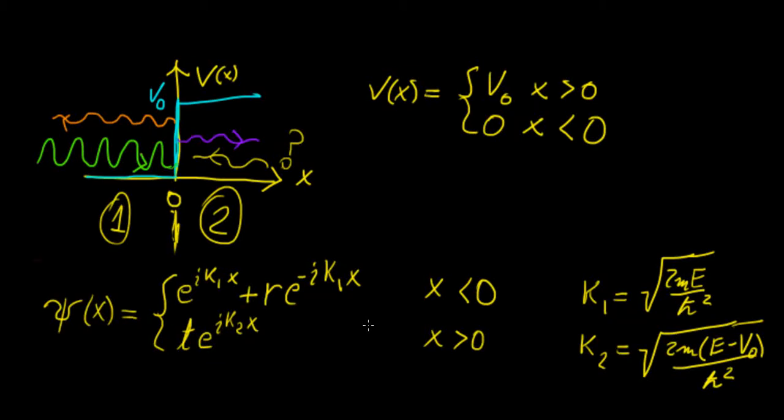Continuing with our videos on the potential step problem, we already found out what the solutions are going to be for both regions. For x less than 0, we're going to have an incident wave and a reflected wave, and for x greater than 0, we're just going to have a transmitted wave.